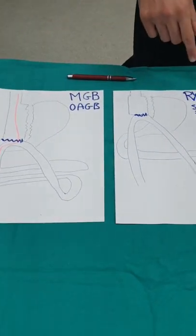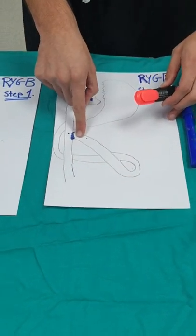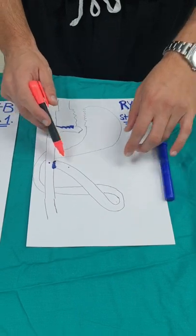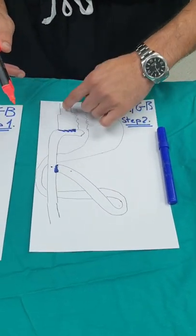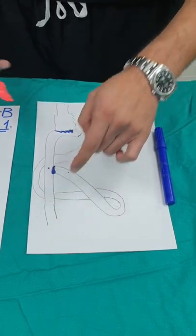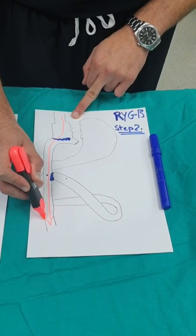As compared to the Roux-en-Y, the bile will never pass by due to the second connection. So what happens, bile will come from this portion of the intestine, and it won't go up. It will go down. But what happens with food here? Same as the other technique, it will go down all the way down there.